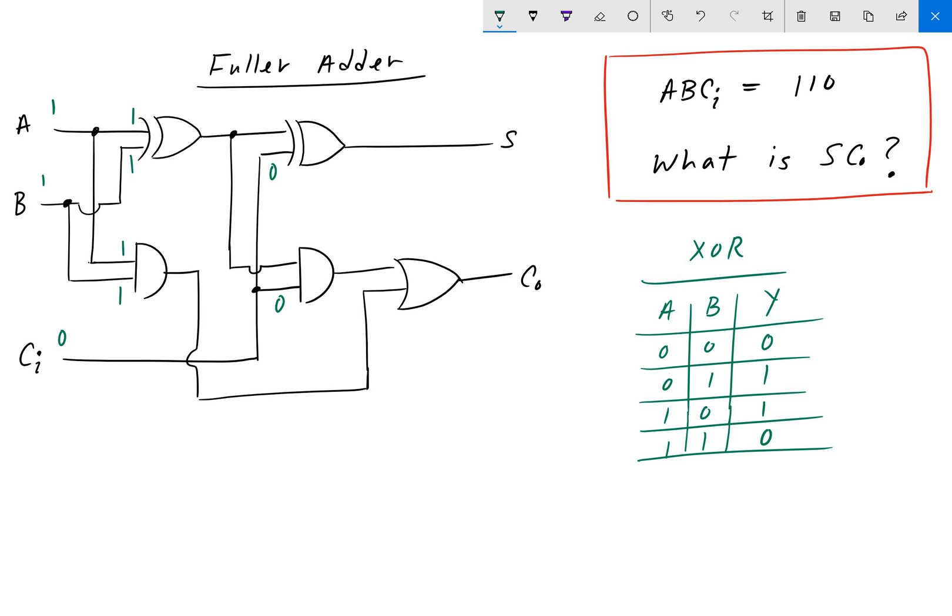Going back to the top, the XOR gate for input A and B, the very top one there. Since you have both of them equal to 1, looking at our truth table here on the right, the output is going to be 0.